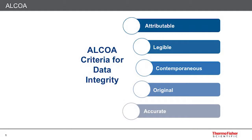The key feature around data integrity is this term ALCOA, which means that the data is attributable — you know who's captured it and when — that it's legible, that it's contemporaneous, meaning the data has been captured at the time, that it's original, and that it's accurate.